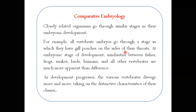Then comparative embryology is another evidence. Closely related organisms go through similar stages in their embryonic development. During embryo development, organisms with close relationships pass through similar stages — their early development is similar. For example, all vertebrate embryos go through a stage in which they have gill pouches on the sides of their throat.